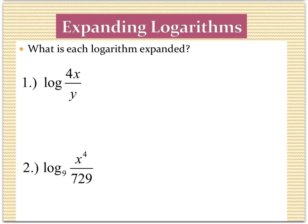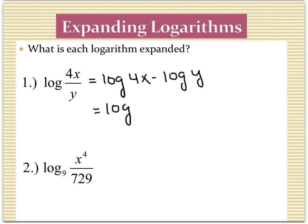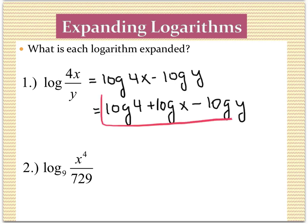Now we're going to expand — we want to write these as many logarithmic expressions as we can, unfolding the log using the properties. In this first example, I have division, which means separating them using subtraction, keeping the common base of 10 — we don't have to write it. Then for multiplication, I can break those up using addition. Now we've fully expanded this, so this is the final answer. You can check by using those same properties to put it back into one logarithmic expression.